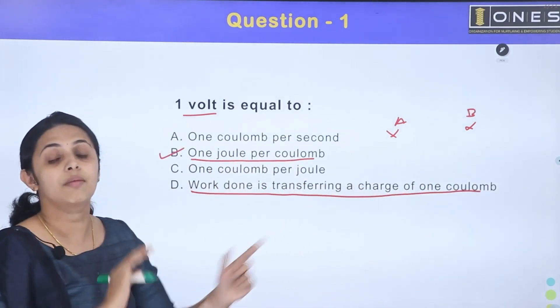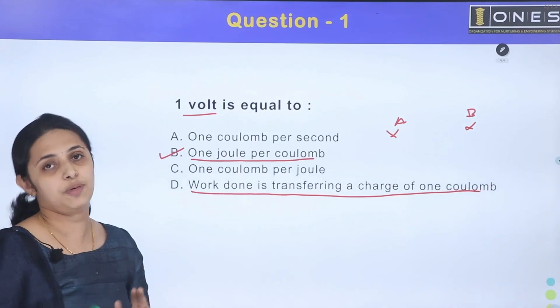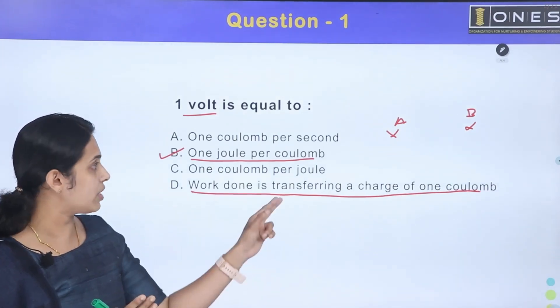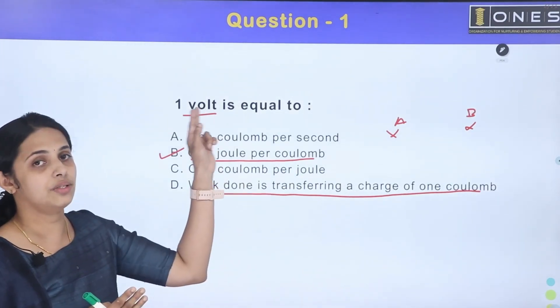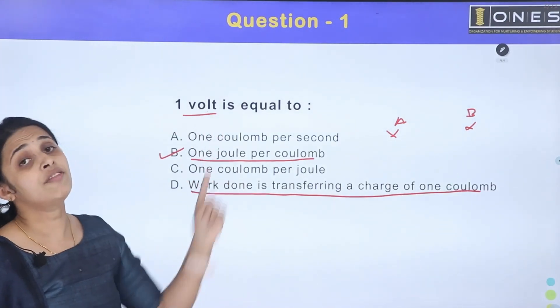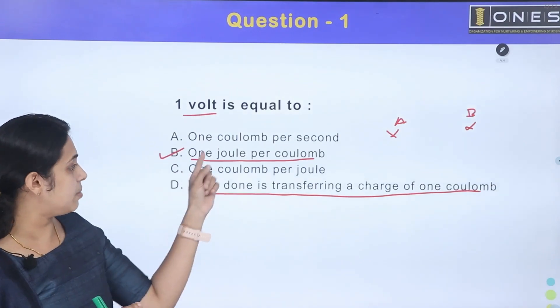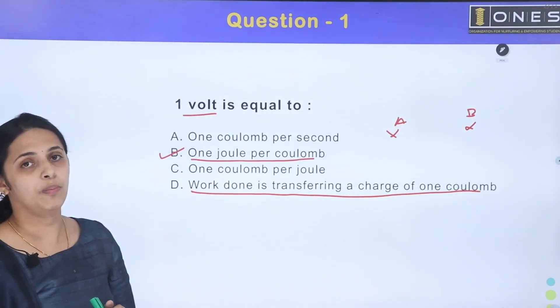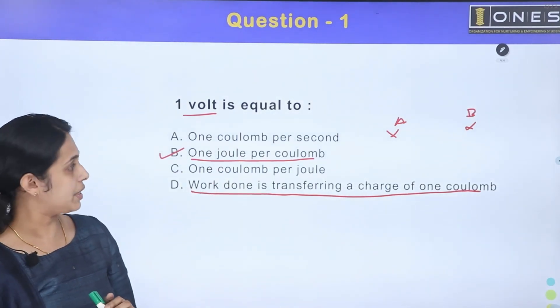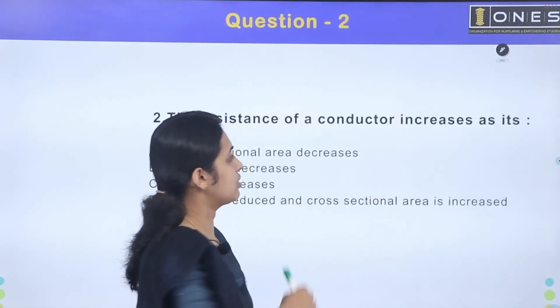What is the potential difference? 1 volt. The correct answer is 1 joule per coulomb.